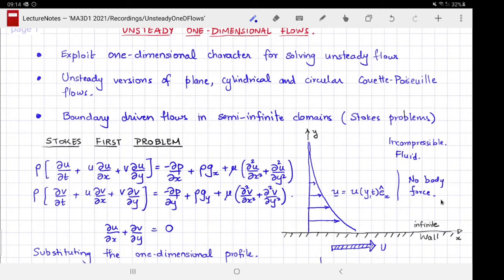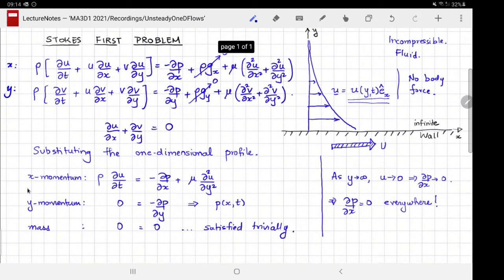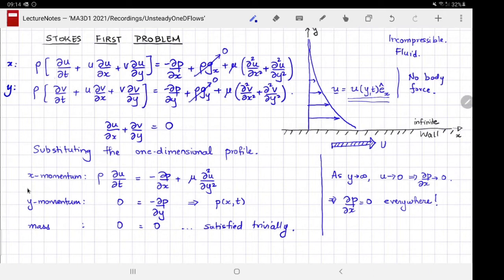To solve for this flow, we will use the Navier-Stokes equations. The first two components are the x momentum conservation and the y momentum conservation. In these equations, the body forces all vanish because of our assumption. When you substitute in this profile, the equations simplify to: we are left with ρ times ∂u/∂t, the pressure gradient along the x direction, and the shear viscous stress term along the y direction.